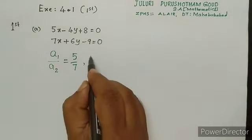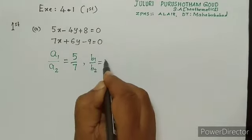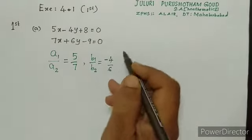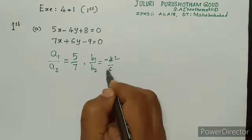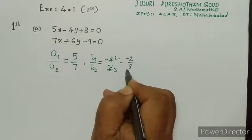And next, b1 by b2. What we get? Minus 4 by 6. If any cancellation, you cut it. 2 to the 4, 2 to the 6. We get minus 2 by 3. Clear, I think.